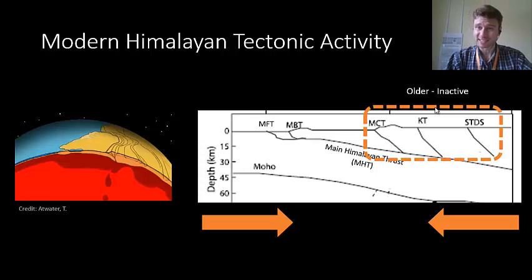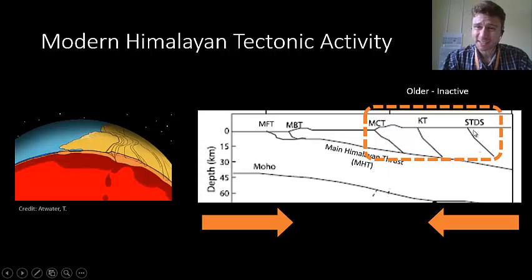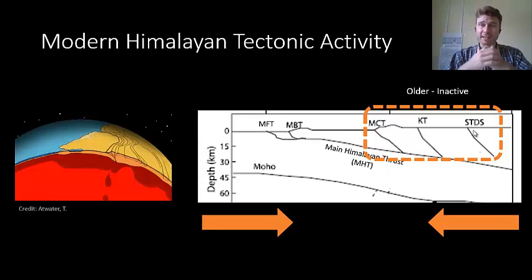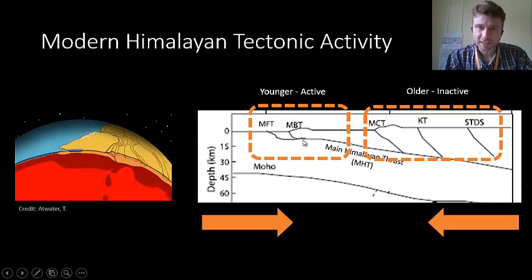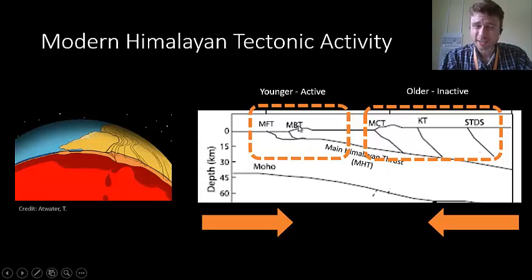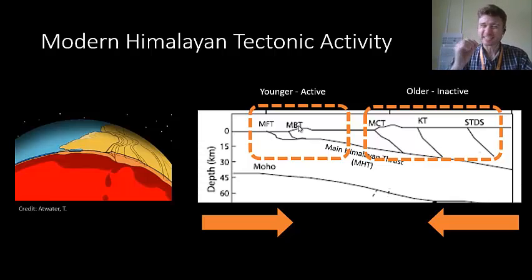This means that today, these older faults in the north are actually inactive. They have remnants and they show the displacement of the crust. But our main movement is happening along these faults right here and where they meet at the main Himalayan thrust below. So our main frontal thrust and our main boundary thrust are key to understanding our earthquake distributions.